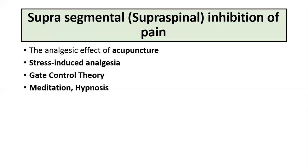The modulation of pain in meditation and hypnosis is also achieved by activating the periaqueductal gray area neurons of the descending analgesic system.